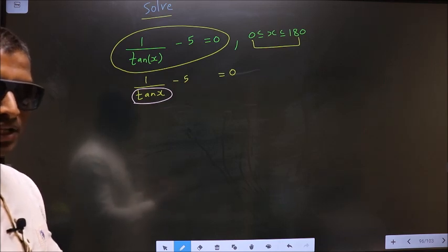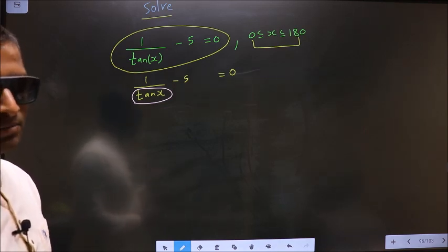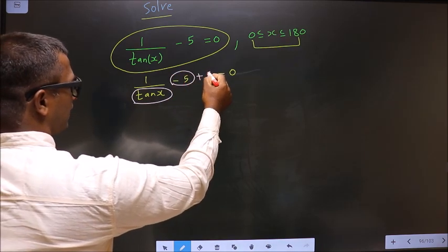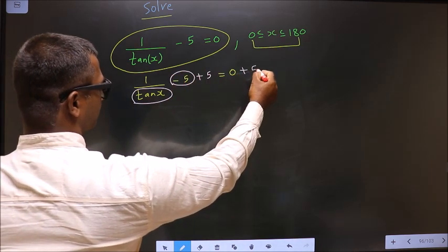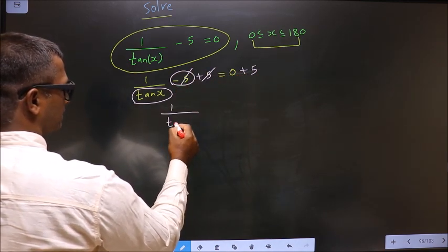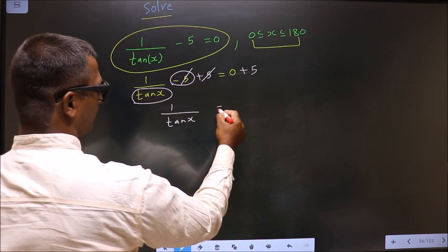For that, remove all the connections connected to it. First, to remove minus 5, you add 5 on both sides. So now this cancels out, you get 1 by tan x equal to 5.